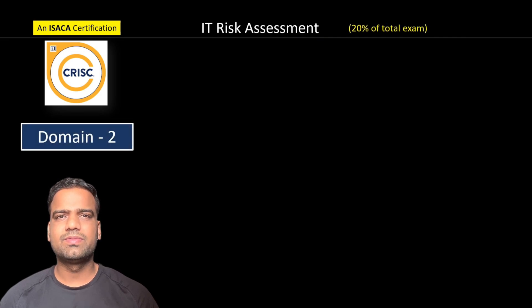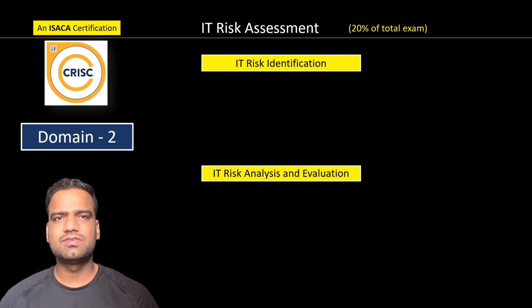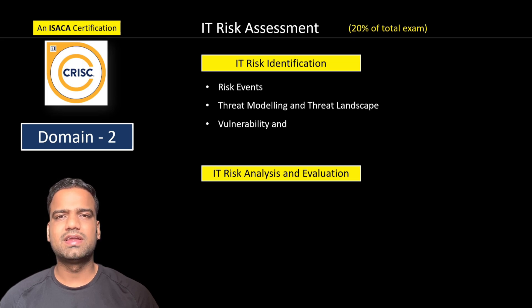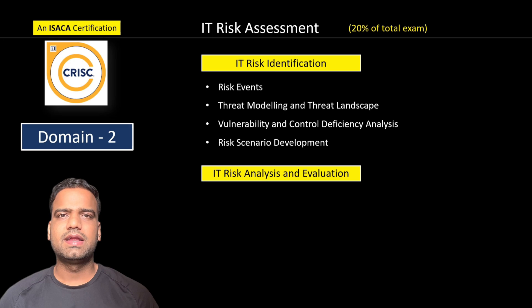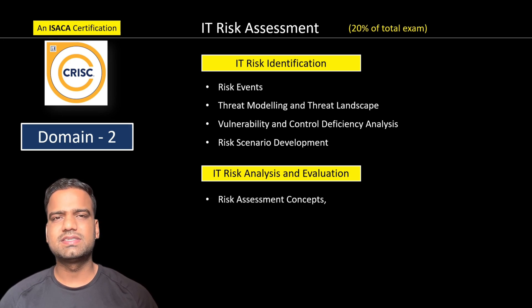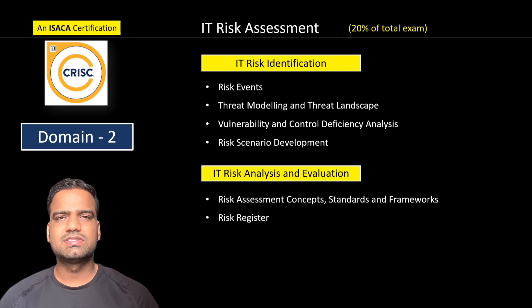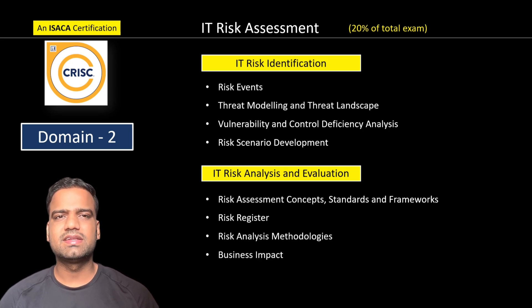Domain two talks about IT risk assessment and includes chapters on IT risk identification and IT risk analysis and evaluation. IT risk identification covers risk events, contributing conditions, loss results, threat modeling and threat landscape, vulnerability and control deficiency analysis, root cause analysis, and developing scenarios based on organizational needs and assets. IT risk analysis and evaluation covers risk management concepts, standards, frameworks, the risk register, risk analysis methodologies, business impact analysis, and inherent and residual risk.